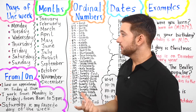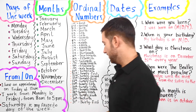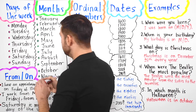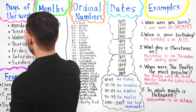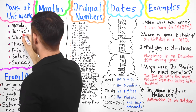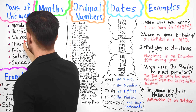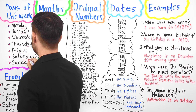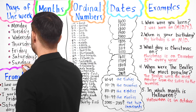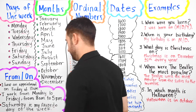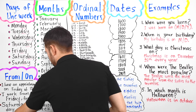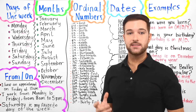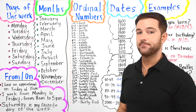Notice that all of these words have the word 'day' at the end — Monday, Tuesday, Wednesday, Thursday, Friday, Saturday, and Sunday. Don't forget, there are seven days in a week.